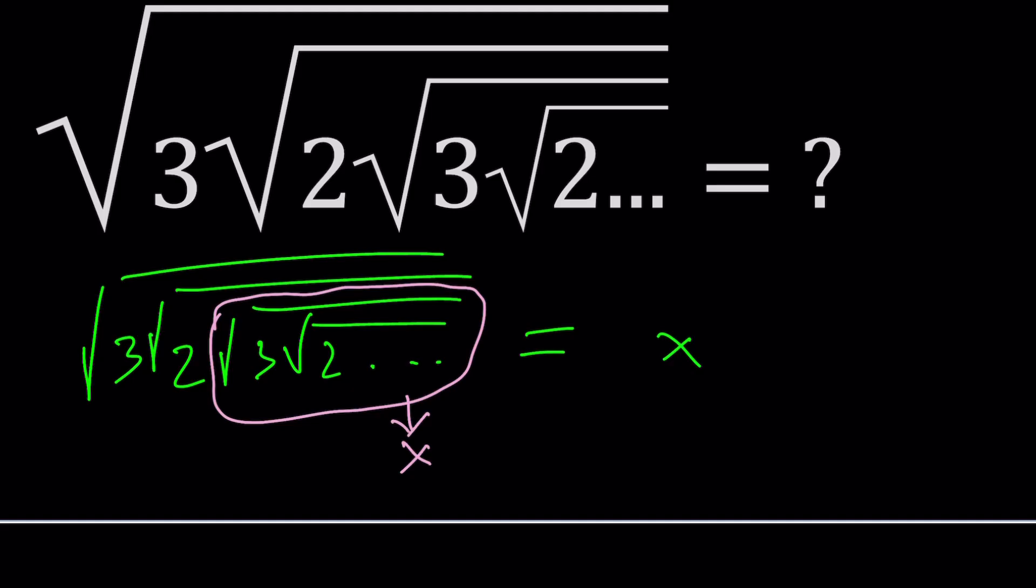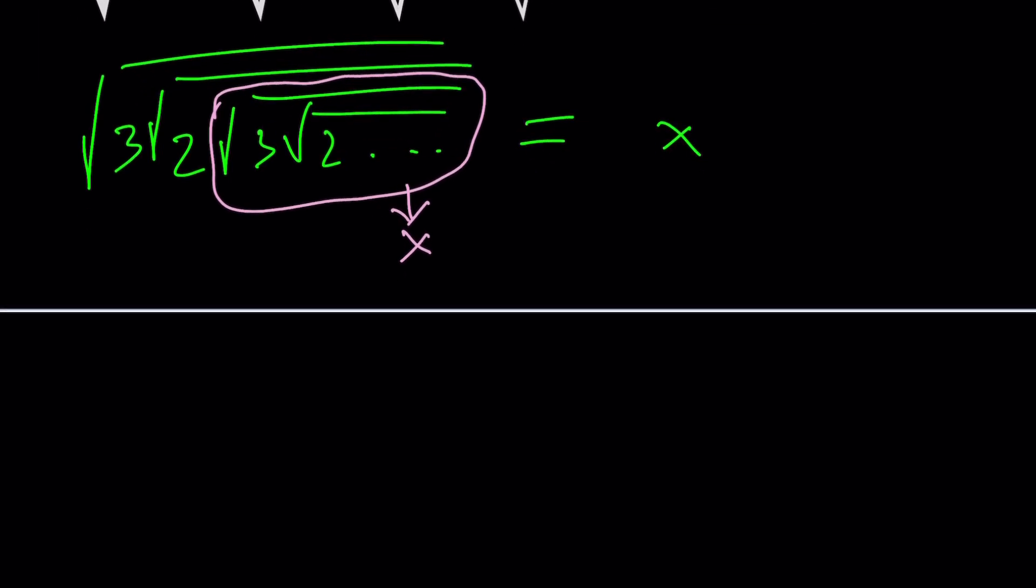So what do we do next? We write the result because now we should have a finite expression. So it's going to look like this: square root of 3 times the square root of 2 and then notice that everything else is x as a huge product. And then of course the whole thing is equal to x. That's where the inner x comes from.